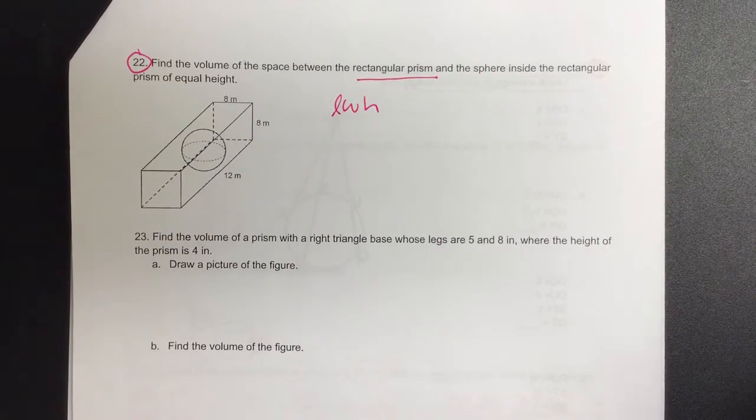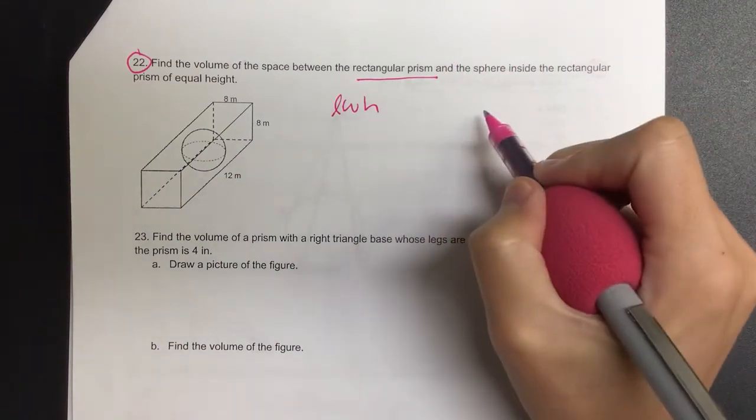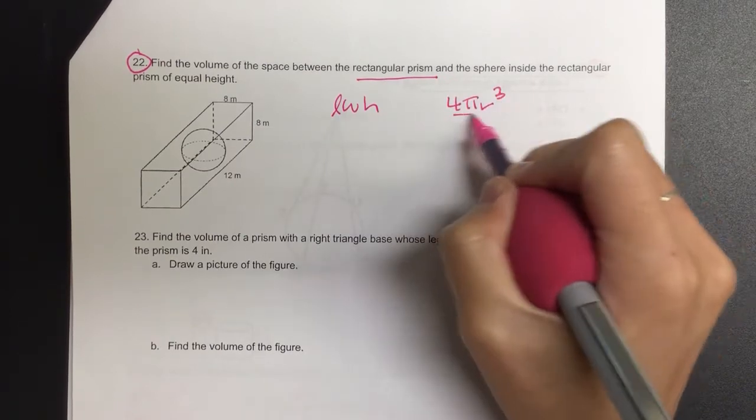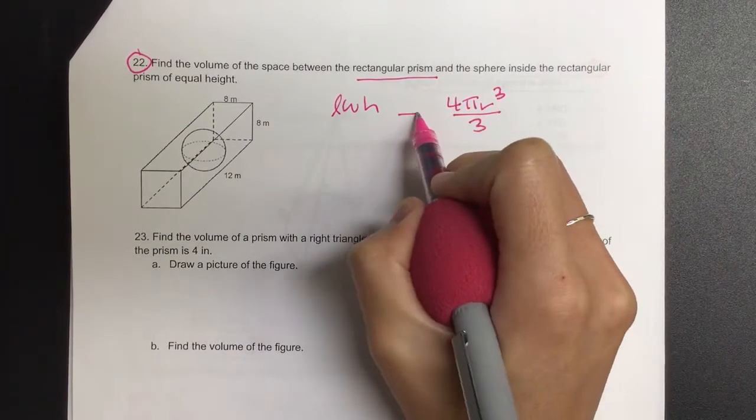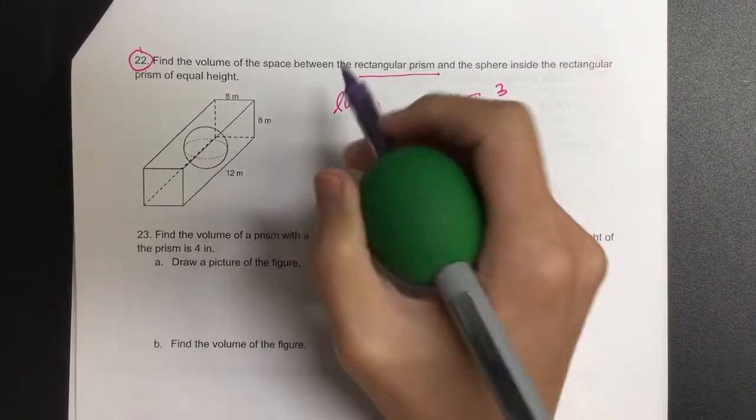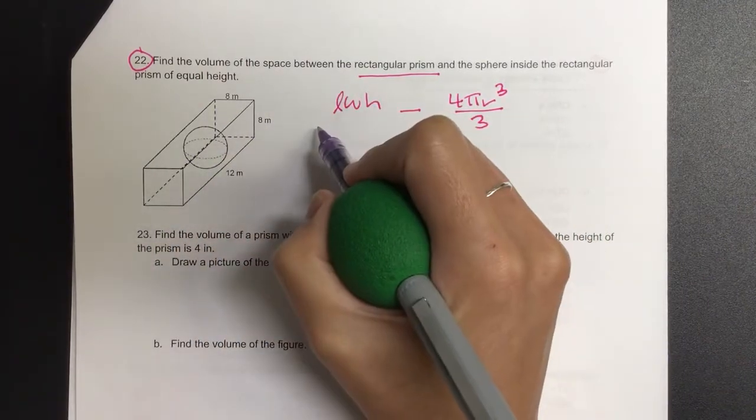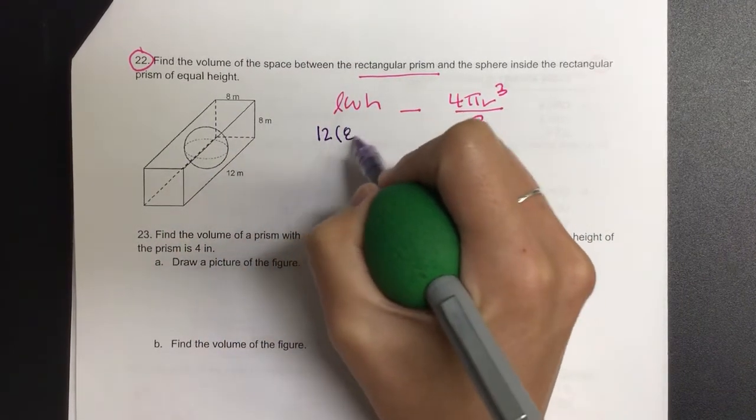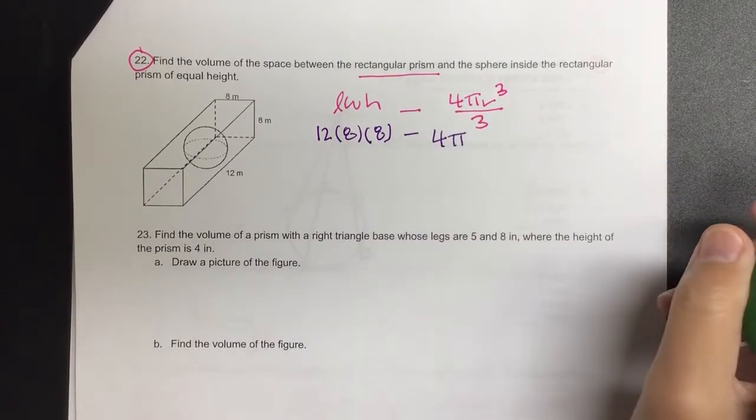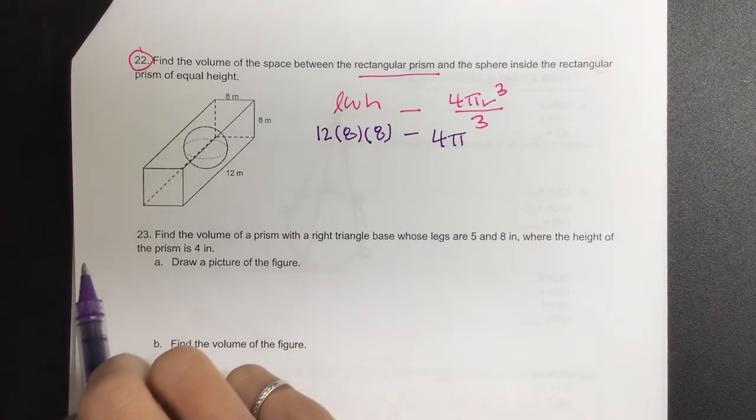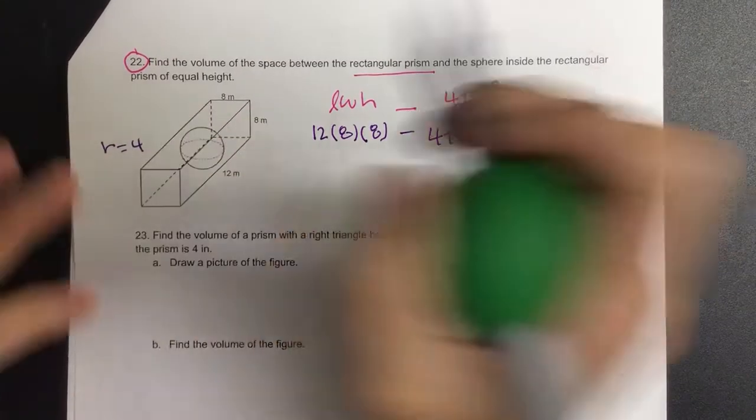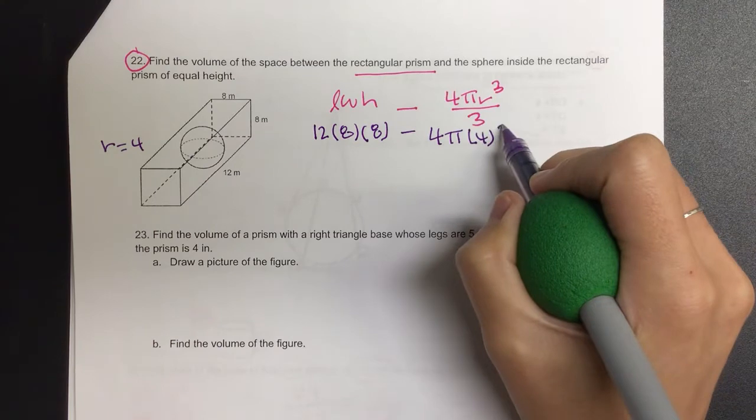What is the volume formula for the sphere? 4πr³ over 3. So I'm going to have to modify my key. I see another mistake. So our length, width, and height for the prism is just going to be all three numbers in any order. And then we have 4π. Now we know the radius has to be how many given that the whole side is 8? 4.